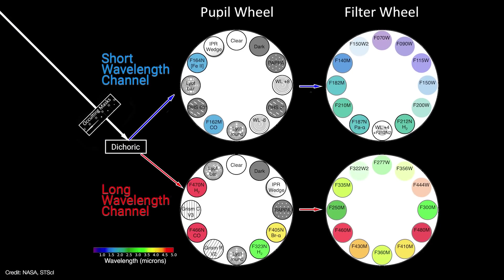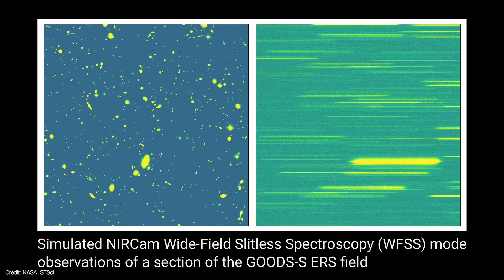To that end NIRCam uses a pair of pupil and filter wheels in each module. But these wheels allow NIRCam to do more than just take pictures.